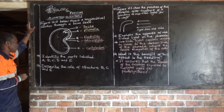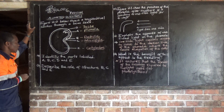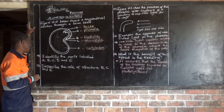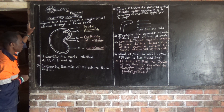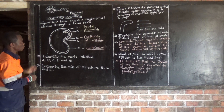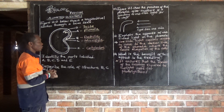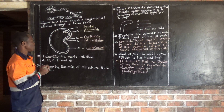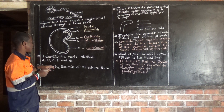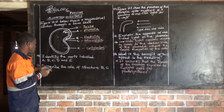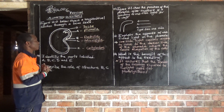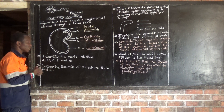Question B says: describe the role of structures B, C, and E. So you are supposed to be very careful when handling these questions — if you identify part B wrong, you are also going to get this question wrong. Correct identification is going to help you answer these other questions.